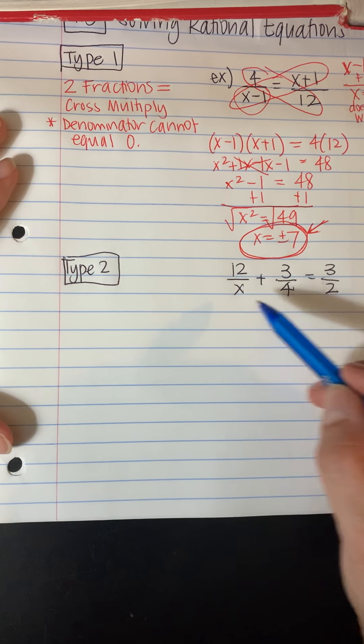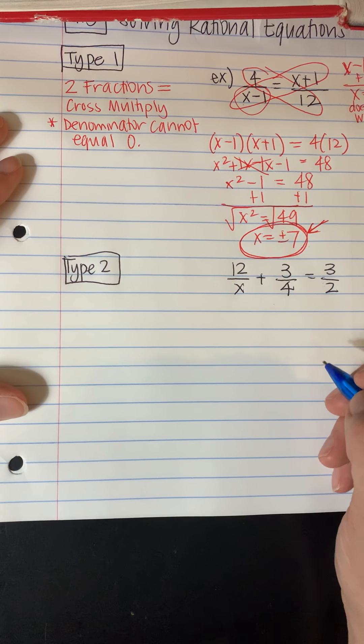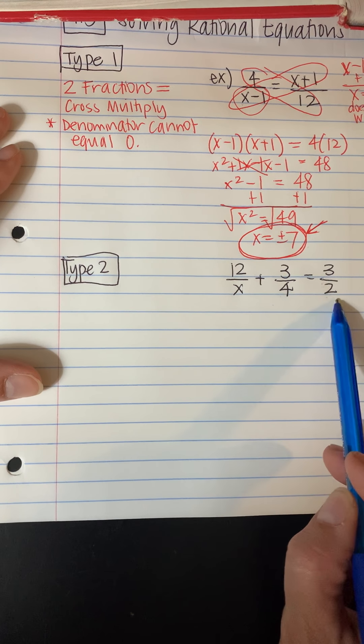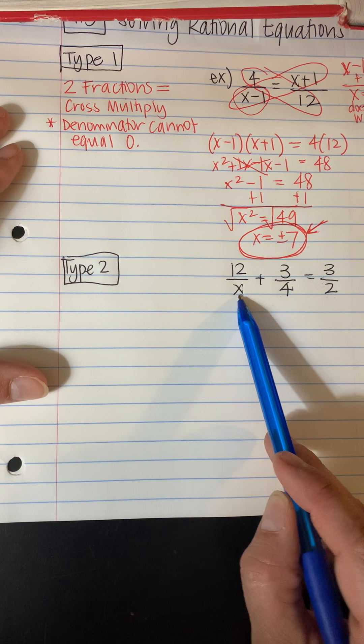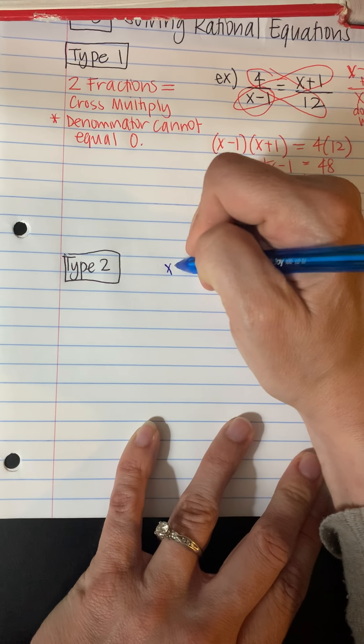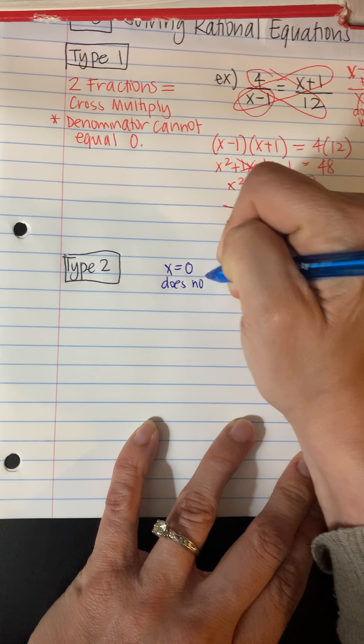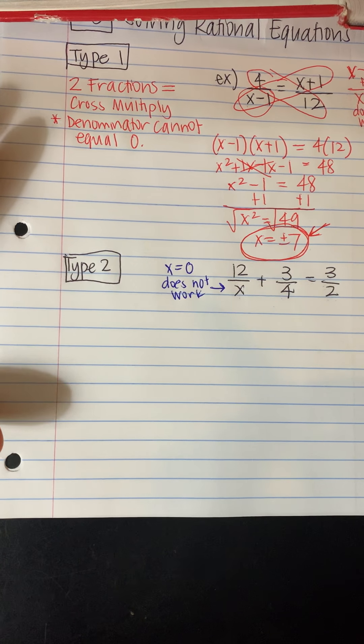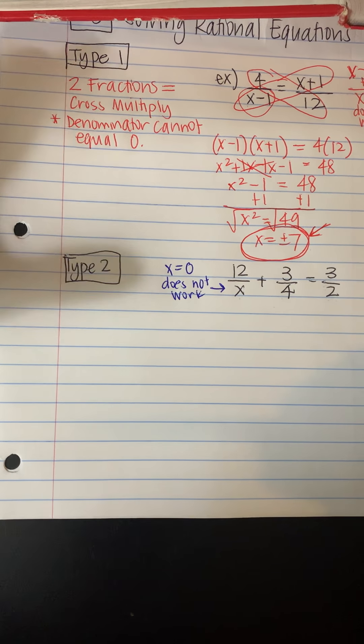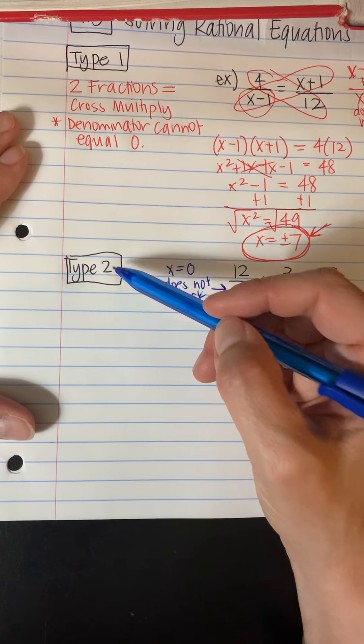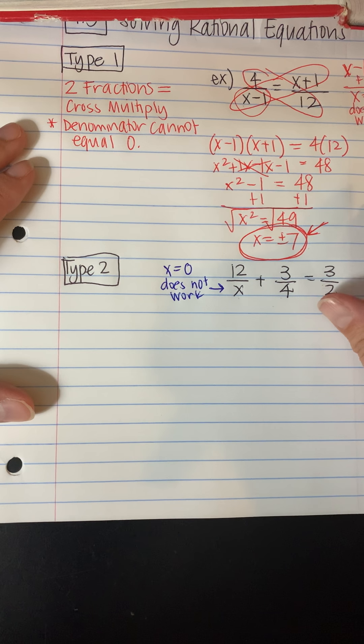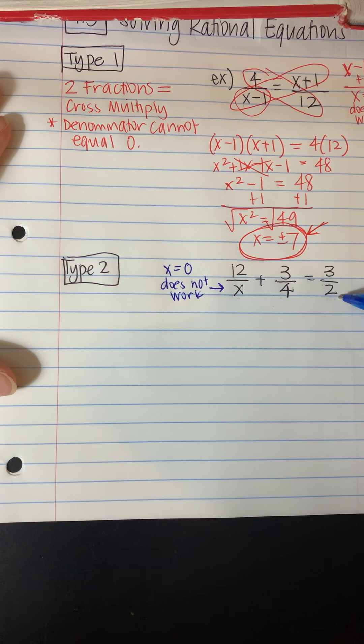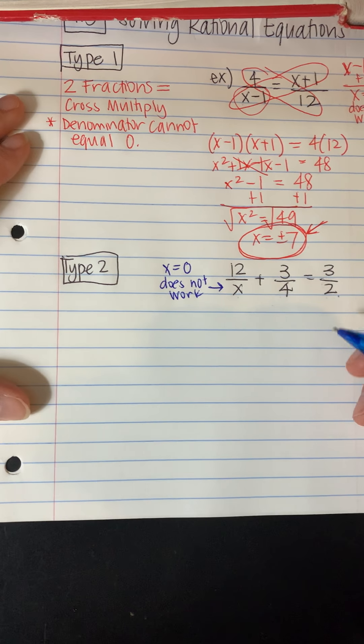First of all, I have to figure out what doesn't work for x. So remember, the denominator can't equal 0. So if you look, this one and this one don't equal 0. But if x was 0, that wouldn't be good. So x equals 0 does not work. Because that would make this denominator equal 0. However, we don't know what the answers are yet, so we're going to figure that out now. So this is type 2. So we can't cross multiply. So we need to learn another method.